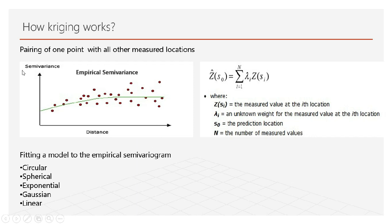After this statistical step, Kriging moves to the next step which is the prediction. Here, Kriging uses the same equation as IDW. The difference between the two models is lambda — in Kriging, lambda depends on both the statistical relationship and the distance, but in IDW, lambda has a relation only with the distance.